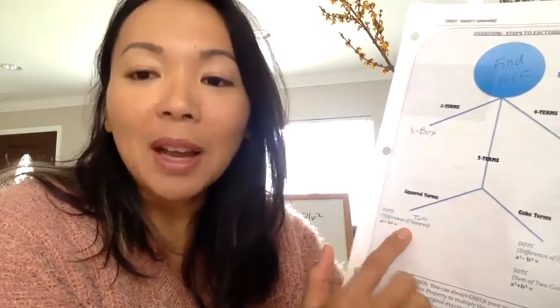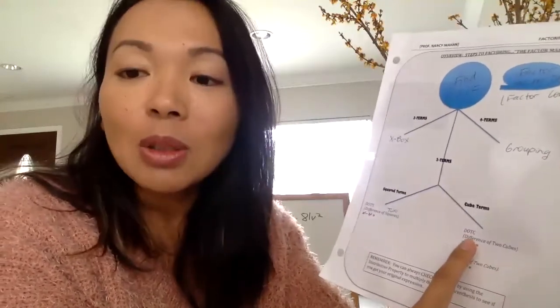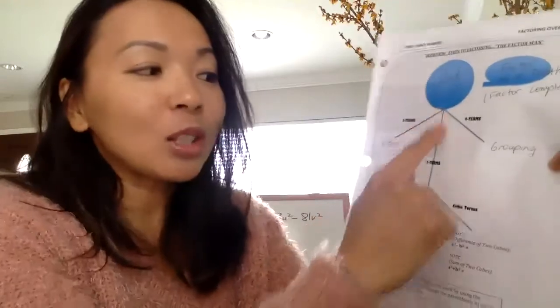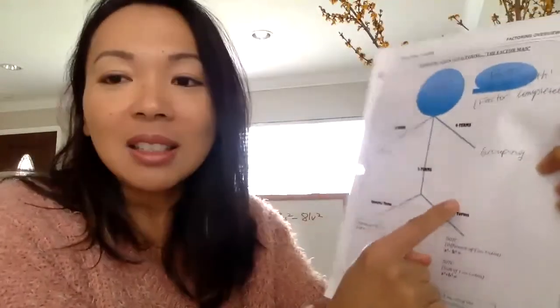If you're asked to factor something in the form of something squared minus something squared, you'll factor it using a specific formula. For cube terms, if something is being cubed minus something being cubed, you use a particular formula — that's called the Difference of Two Cubes, or DOTC (D-O-T-C). And something cubed plus something cubed is the Sum of Two Cubes, SOTC (S-O-T-C). So whenever I get two terms, I ask myself: is it DOTS, DOTC, or SOTC?